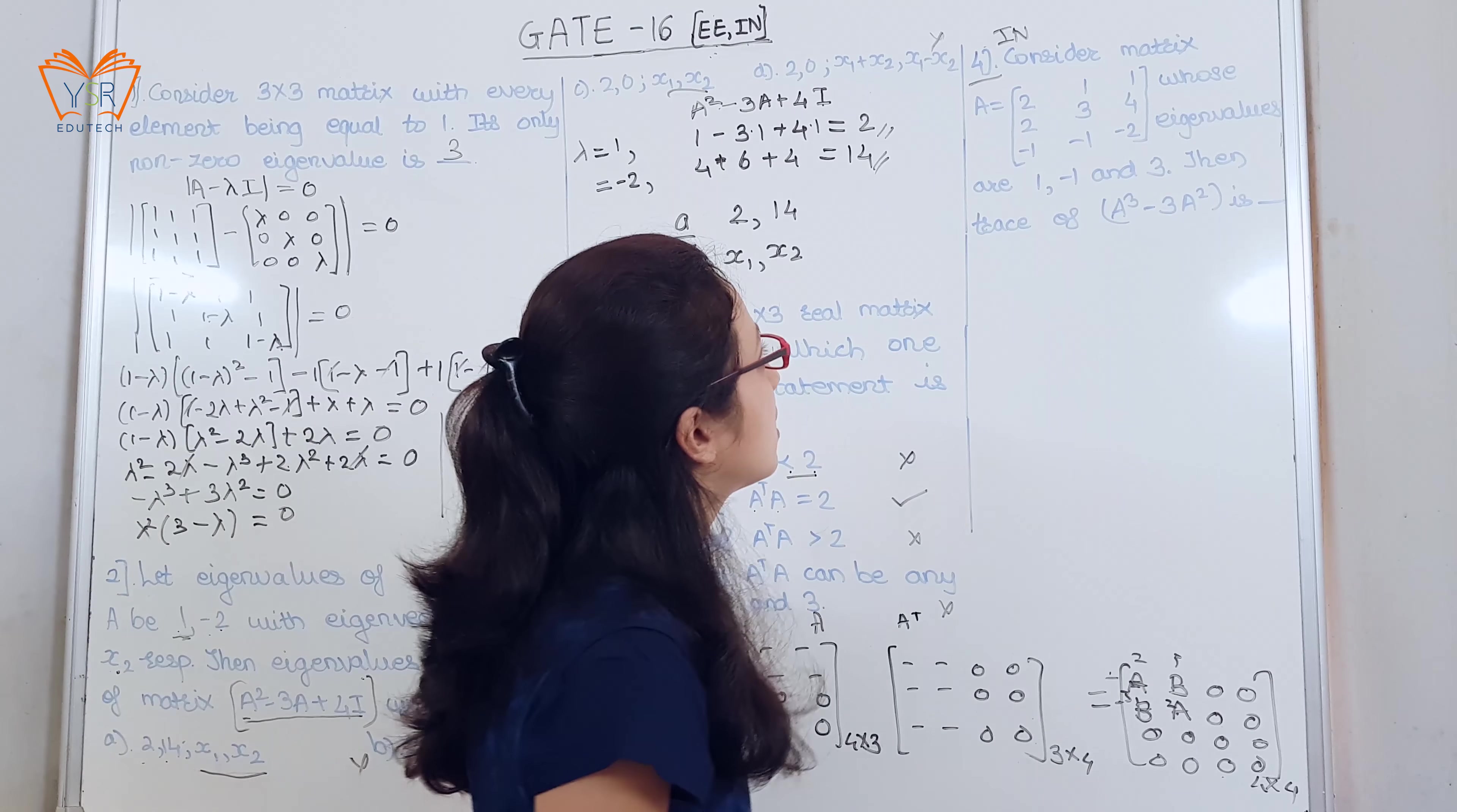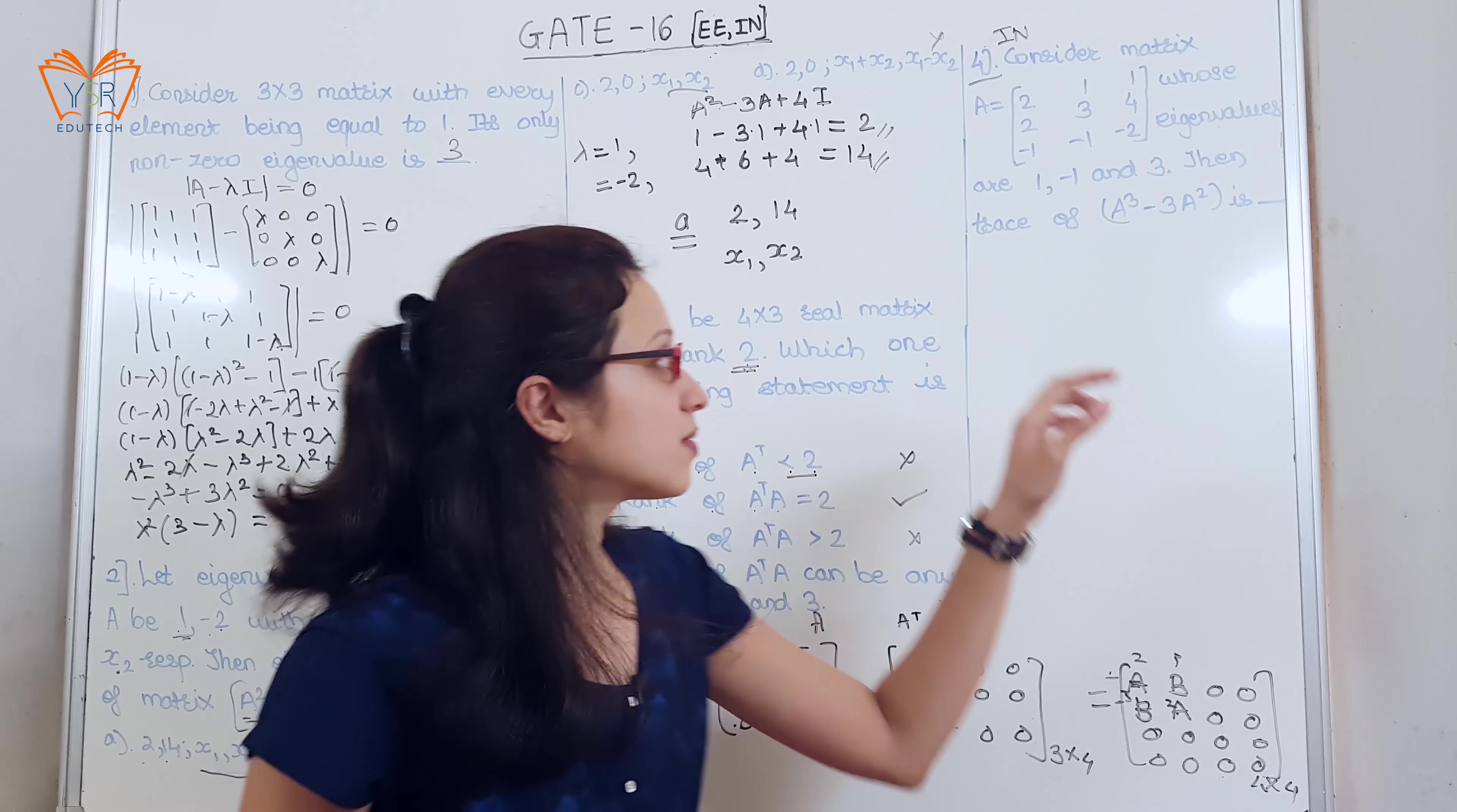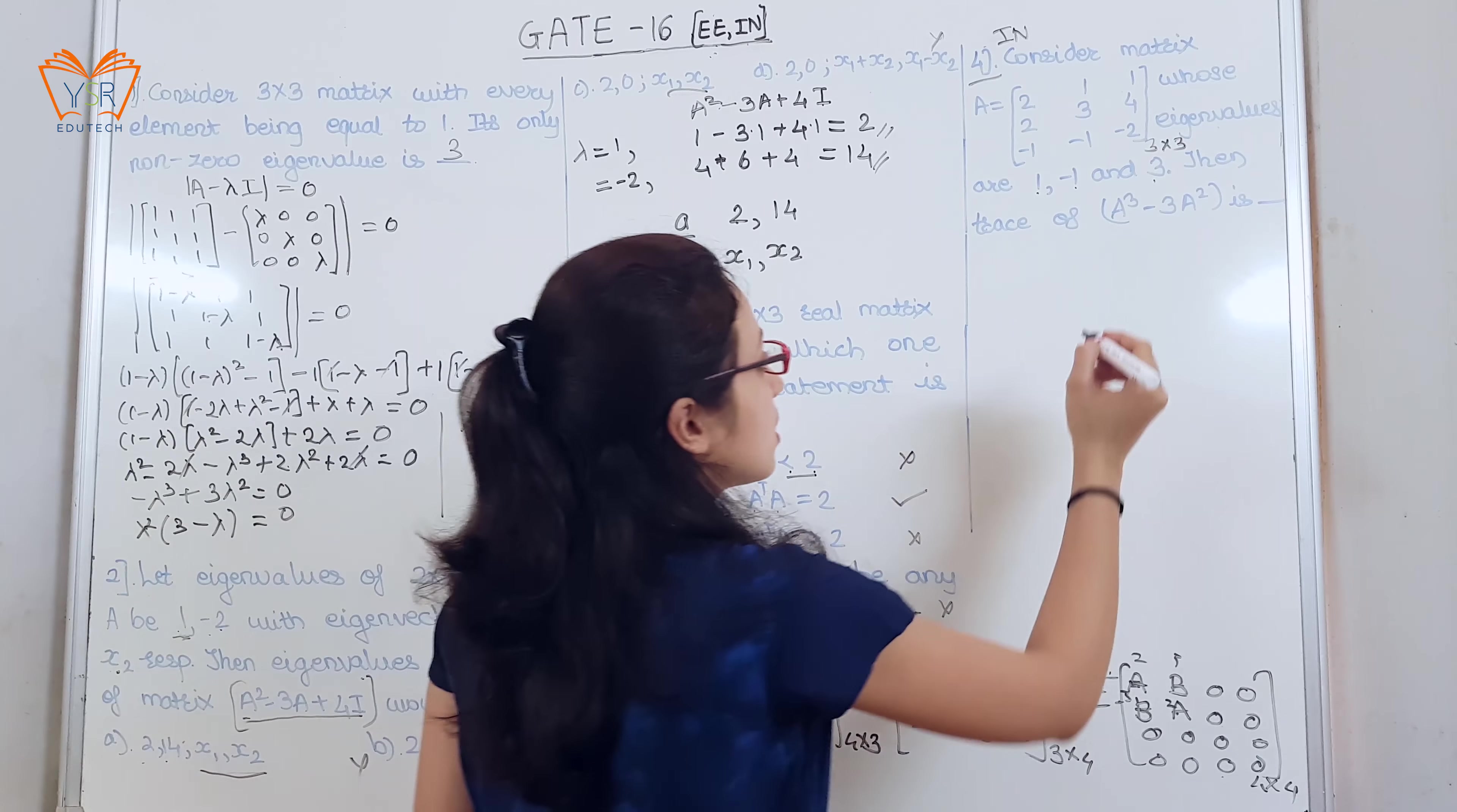The last example. I again repeat, this example was asked for the IM stream. Consider matrix A whose eigenvalues are 1, minus 1, 3, then the trace of A cube minus 3A square is. So, whatever concept was applied here, the same concept will be applied here. That is for 3 by 3 matrix, the 3 eigenvalues given are 1, minus 1 and 3. For if the matrix is cubed or squared, the eigenvalues will also be cubed and squared. Let us see how.